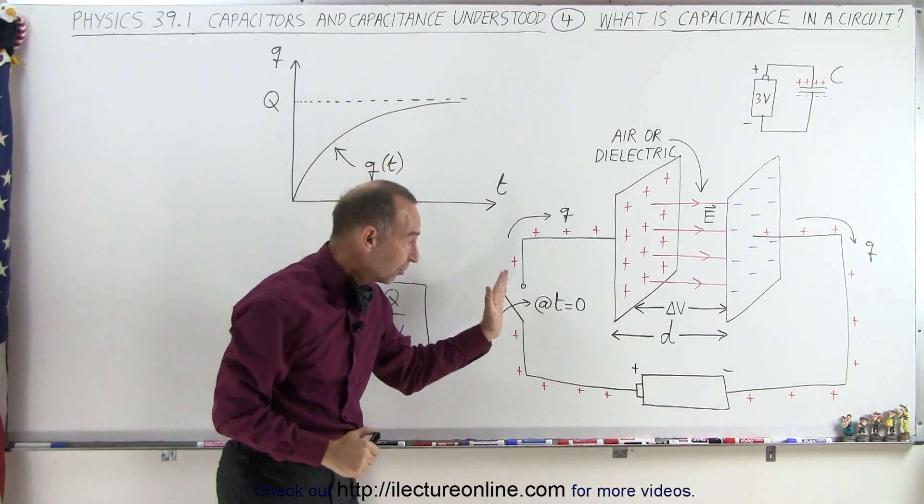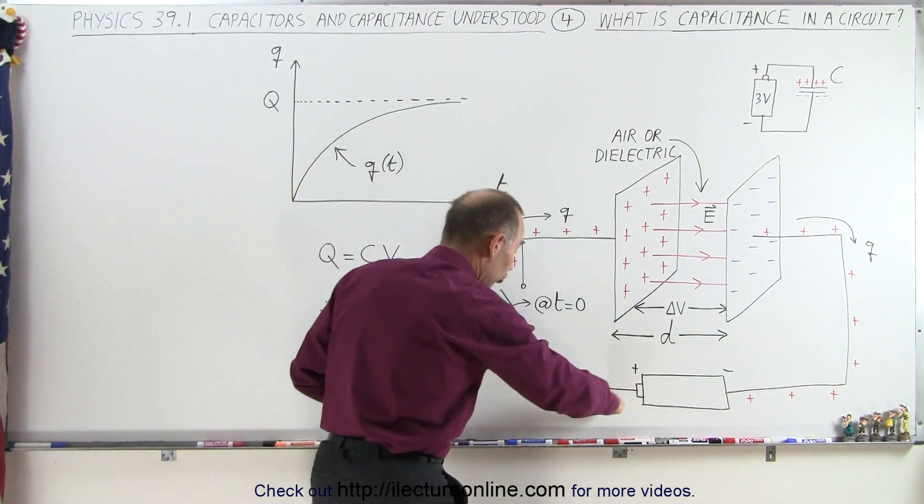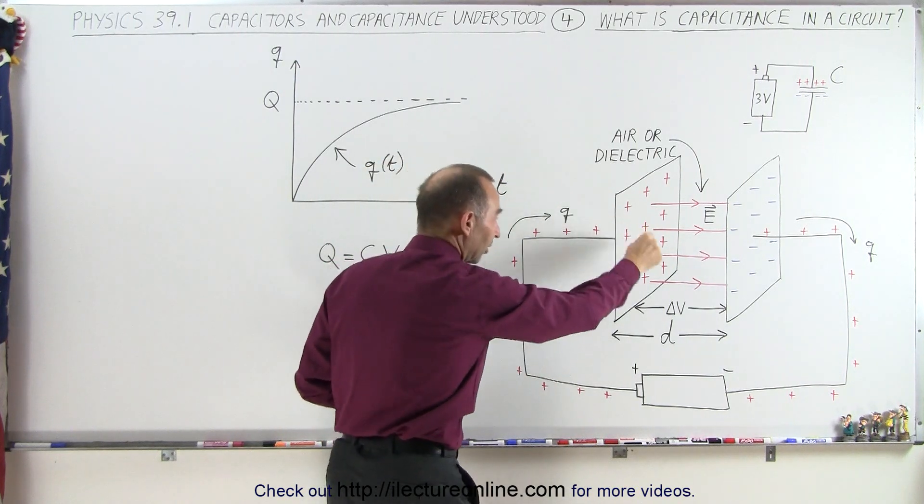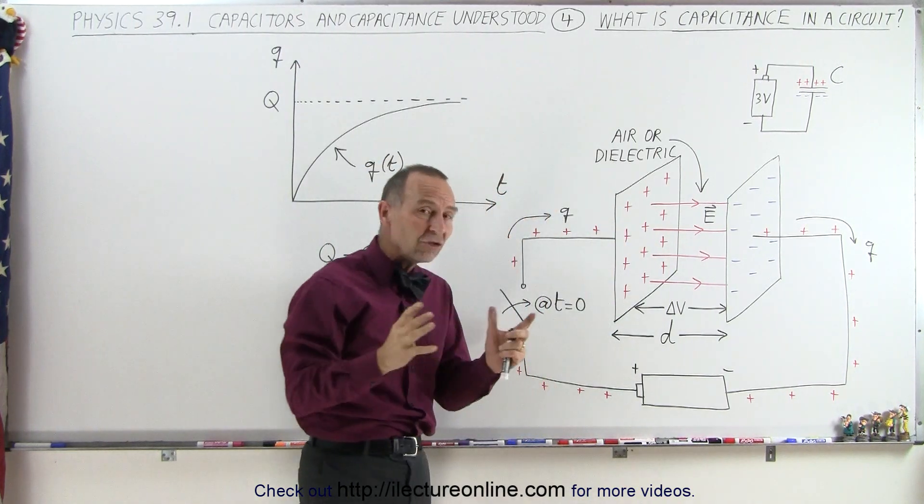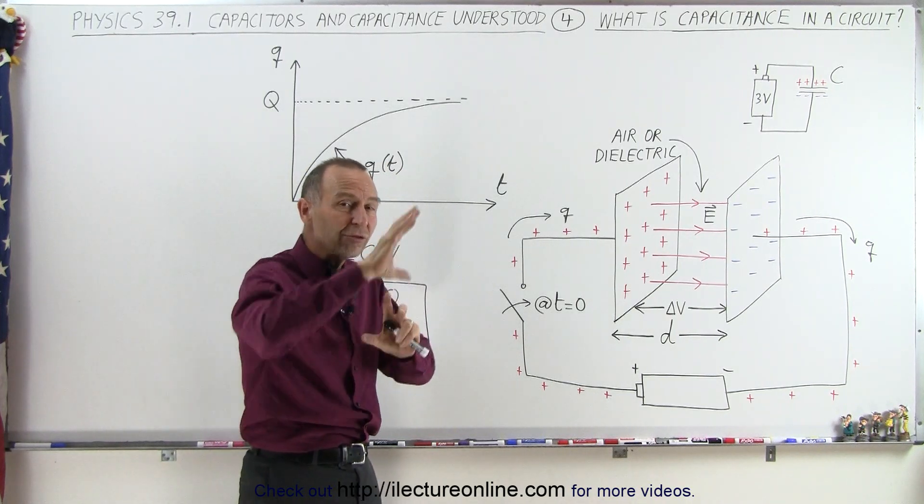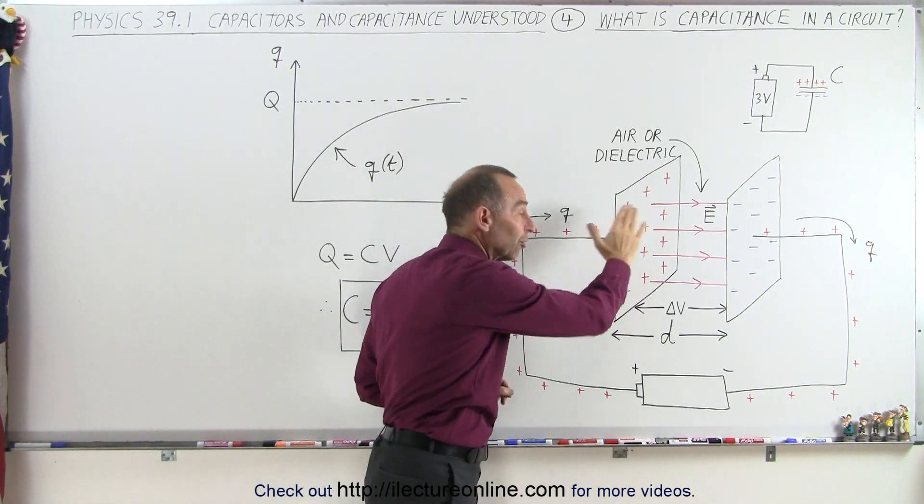At time equals zero, we close the switch. Now, the battery will begin to push charges onto the capacitor plate. First, it puts one charge on it, the second charge, the third charge. And initially, as there are very few charges onto the plates, the charges will distribute themselves as far away from one another as possible, because they repel each other on this plate.